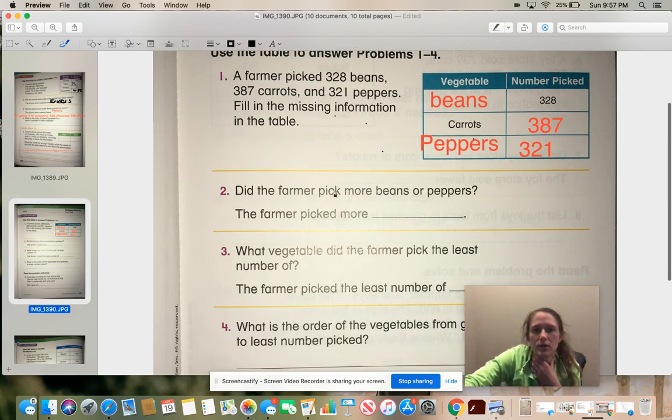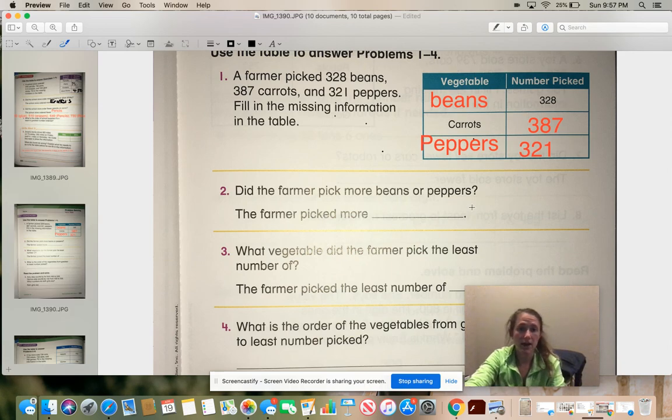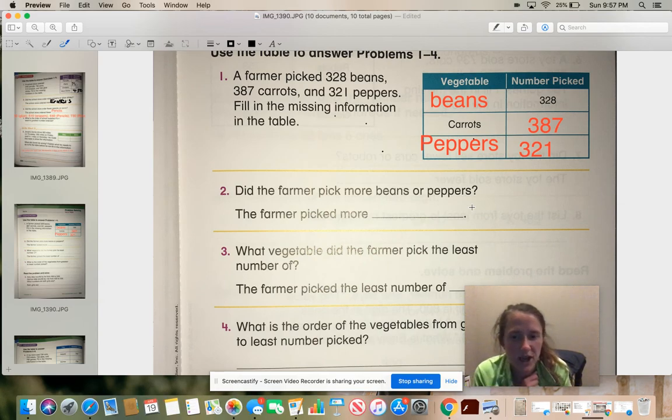So now we have to use the box to answer the next couple questions. Did the farmer pick more beans or peppers? Go ahead and look at your chart. Beans or peppers. Well, 328 and 321, beans is bigger. So you can go ahead and write beans in that blank. I'm going to let you write that without me writing it so you have to follow along and not just copy my answers.